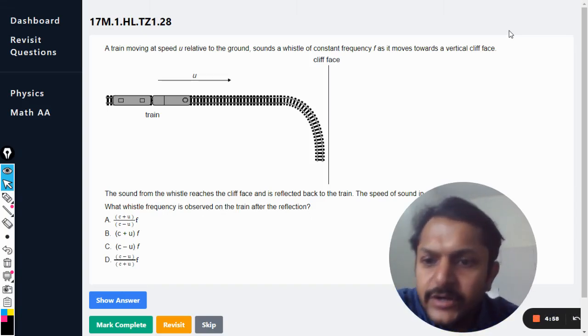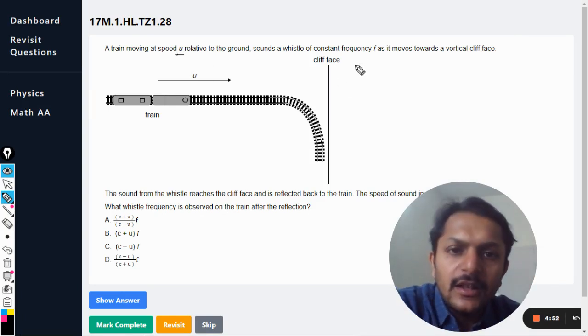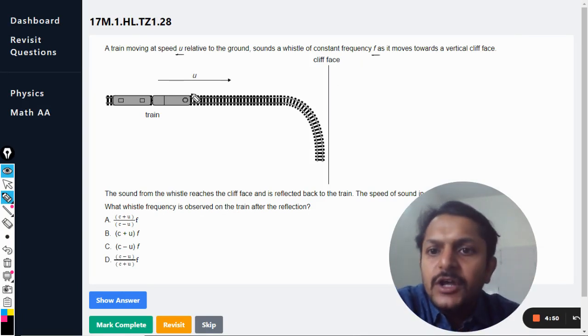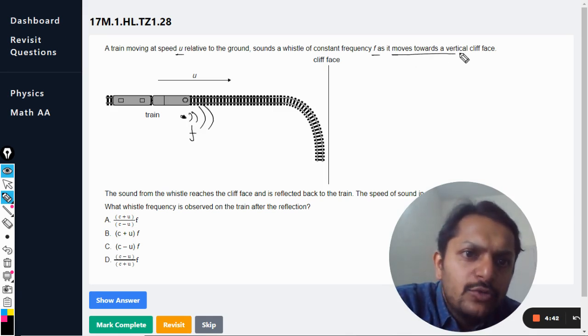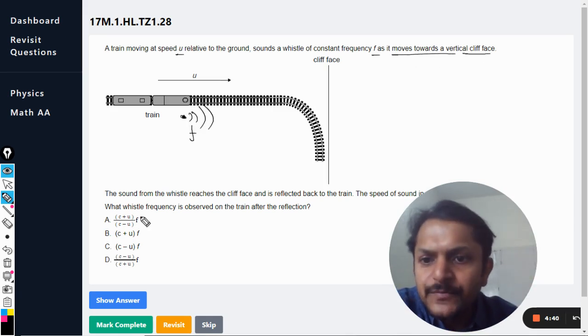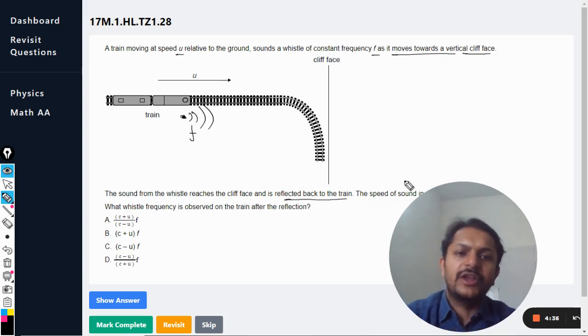Okay dear students, let us see what is in this question. A train moving with speed u relative to the ground sounds a whistle of constant frequency f. So this is a train which is acting like the source of the sound, and a sound is emitted with frequency f as it moves towards a vertical cliff face. The sound from the whistle reaches the cliff face and is reflected back to the train.